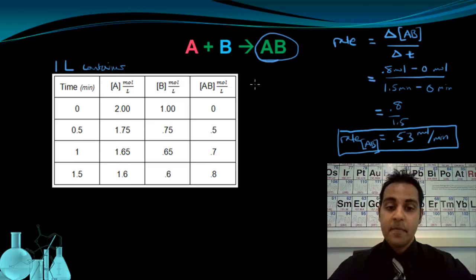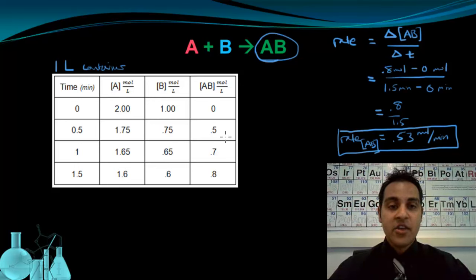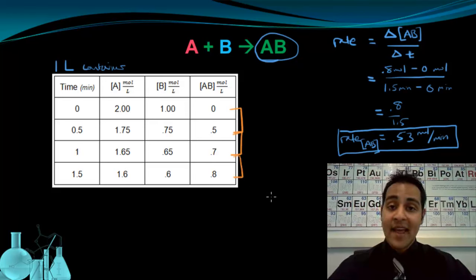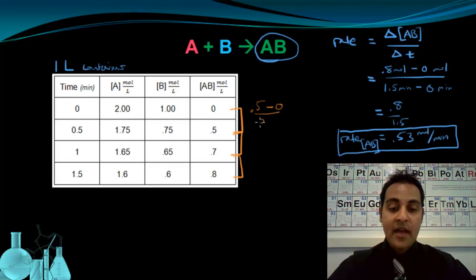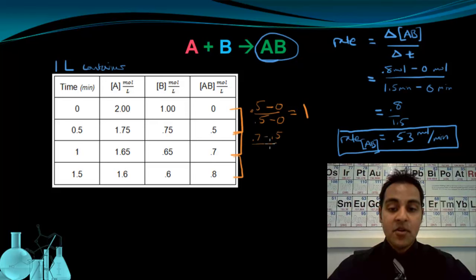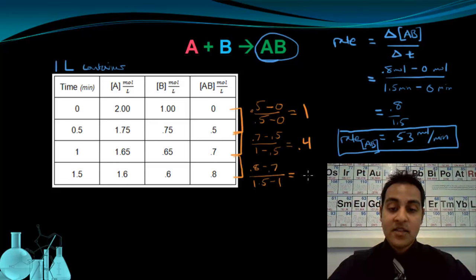Let's look at this case again. We calculated the overall rate for the formation of AB — I say overall rate because we used the final value and the initial value. However, if you look at the individual steps — from 0 to half a minute, from half a minute to one minute, and from one minute to a minute and a half — these rates for each step are going to be different. The first is 0.5 minus 0 over 0.5 minus 0 minutes, giving a rate of 1. The next is 0.7 minus 0.5 over 1 minus 0.5, giving a rate of 0.4. The last is 0.8 minus 0.7 over 1.5 minus 1, giving a rate of 0.2.